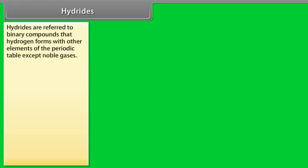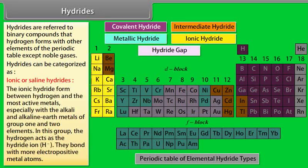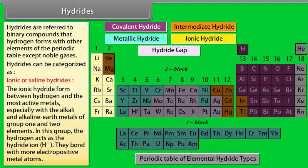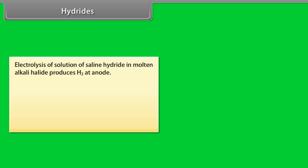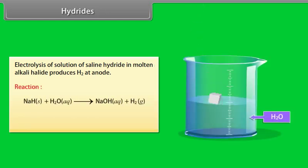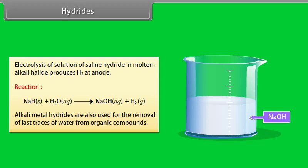Hydrides. Hydrides are referred to binary compounds that hydrogen forms with other elements of the periodic table except noble gases. Hydrides can be categorized as ionic or saline hydrides. The ionic hydride form between hydrogen and the most active metals, especially with the alkali and alkaline earth metals of group 1 and 2 elements. In this group, the hydrogen acts as the hydride ion. They bond with more electropositive metal atoms. Electrolysis of solution of saline hydride in molten alkali halide produces H2 at anode. The reaction is given as... Alkali metal hydrides are also used for the removal of last traces of water from organic compounds.